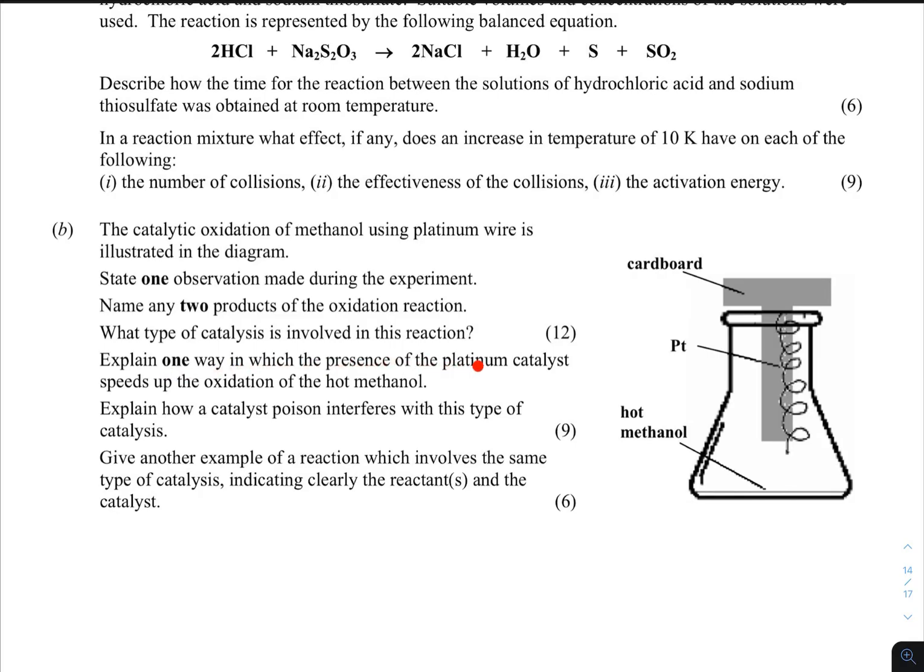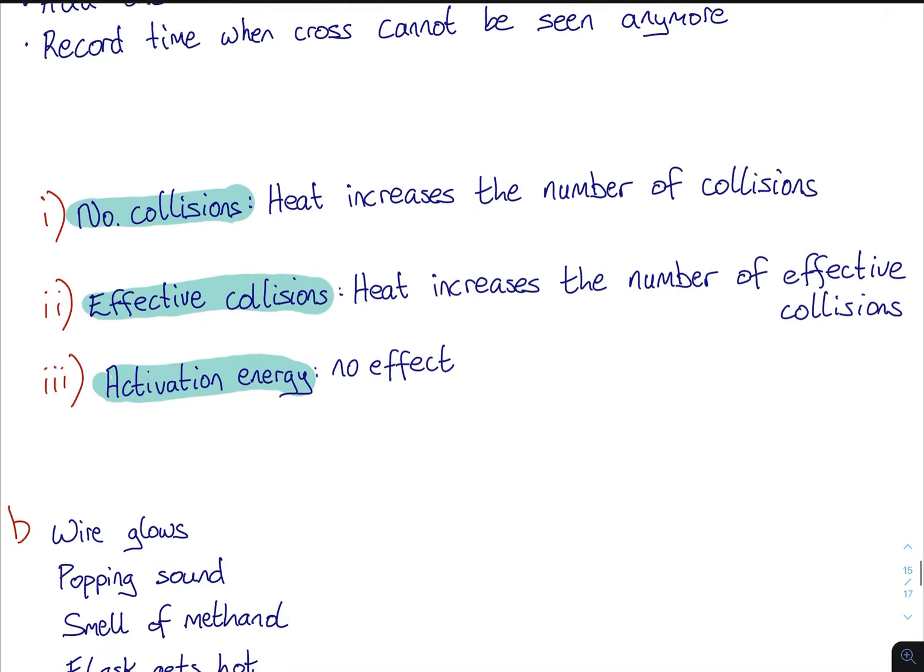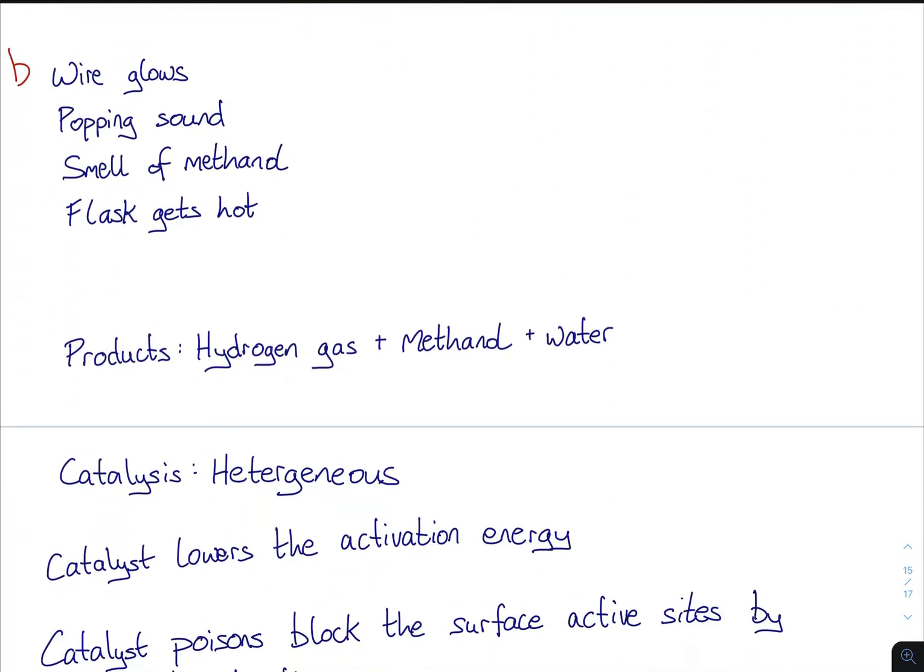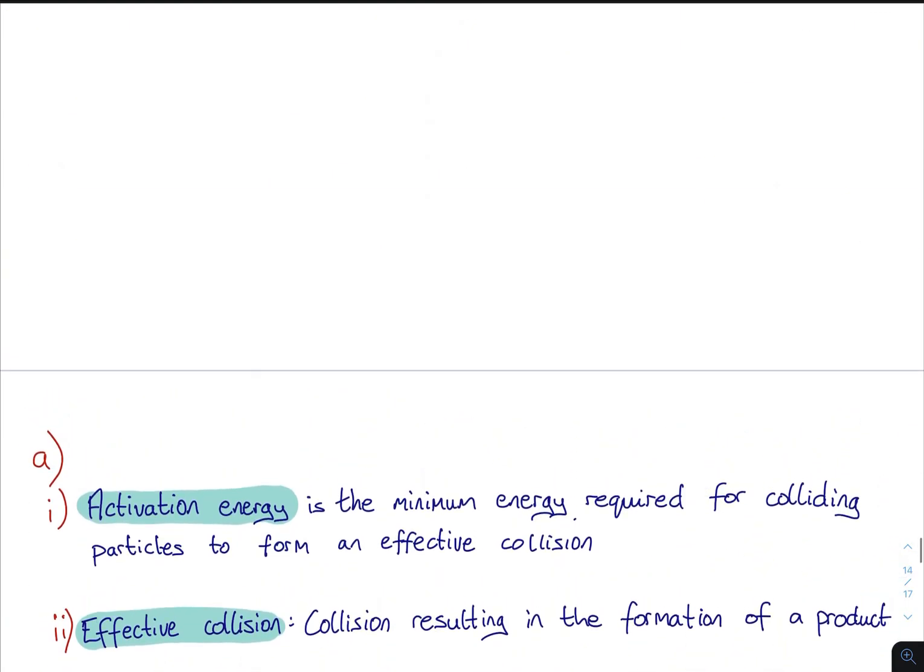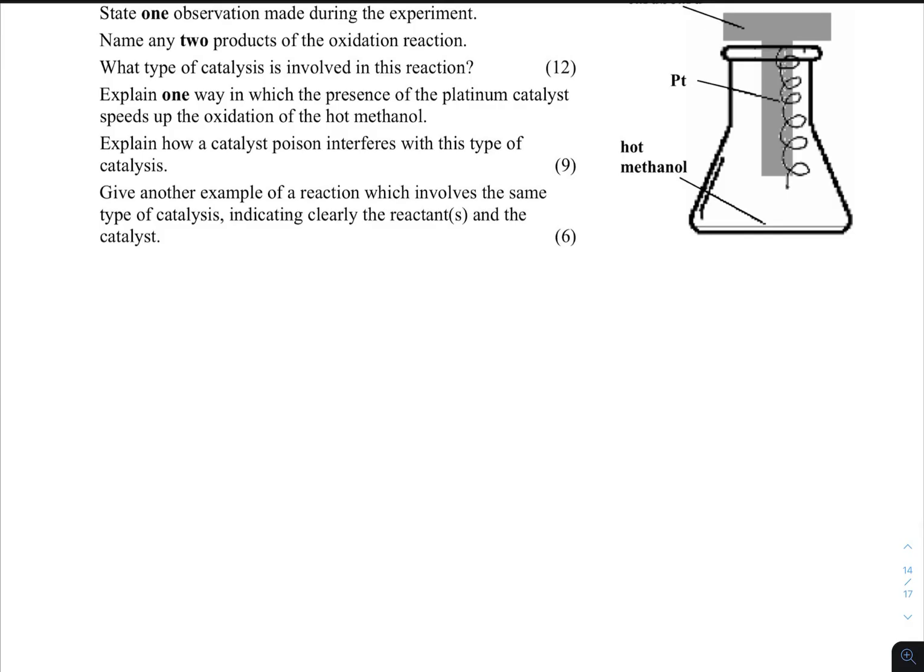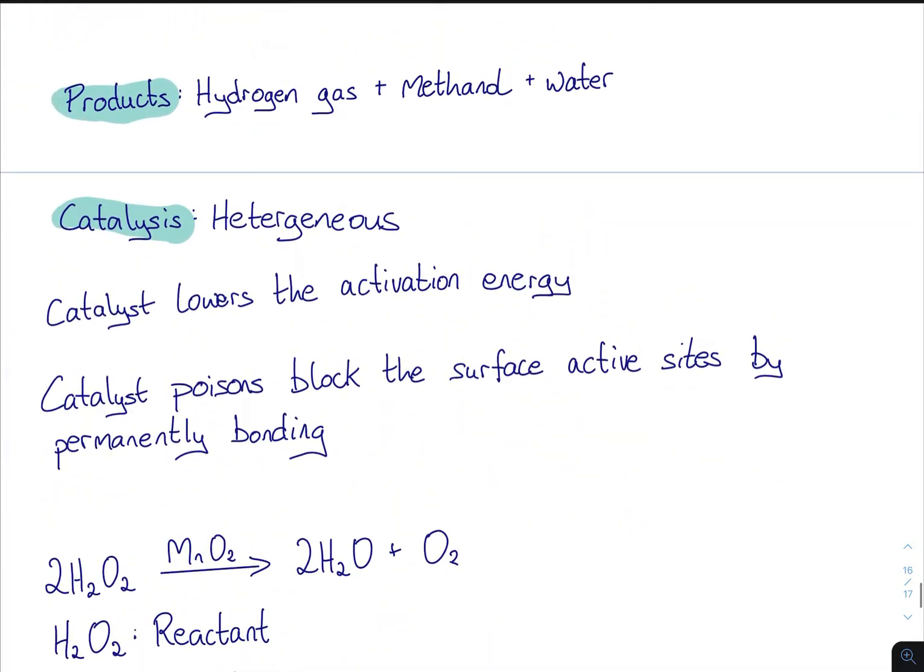We've seen this picture before. You get the smell of methanol forming for the products - methanol forms, hydrogen gas forms because of the popping sounds, and water. Type of catalysis: heterogeneous catalysis. Explain one way in which the presence of the platinum catalyst speeds up the oxidation of the hot methanol. Well, all you have to do there is state that the platinum catalyst lowers the activation energy. That's what the catalyst is. The catalyst lowers the activation energy.